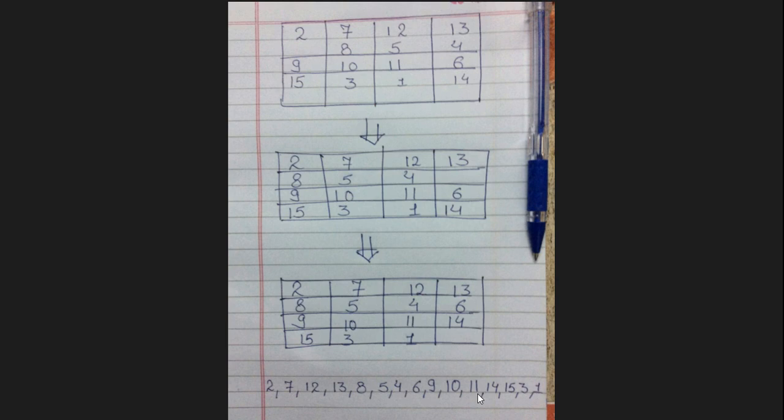Check all those numbers which are smaller than 2 and are placed to the right of 2. The count comes out to be 1 because 1 is the only number which is smaller than 2 and is placed to the right of 2.